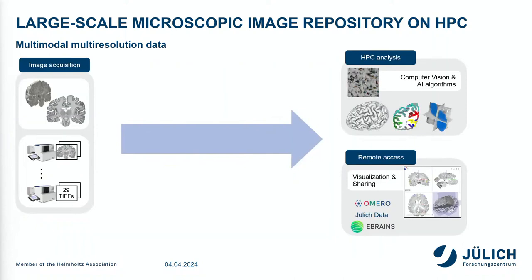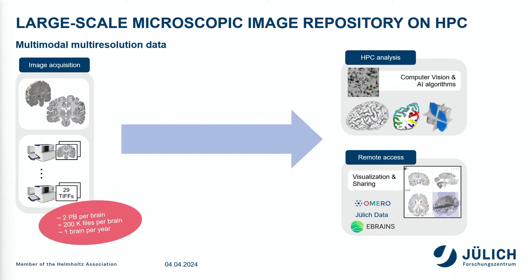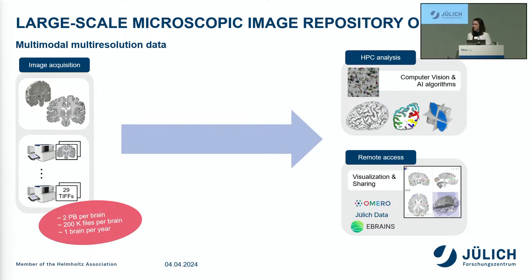To achieve this beautiful atlas, we take post-mortem human brains, cut them into thin slices, and these slices are then digitized with high-throughput scanners. We have about 7,000 sections for one brain, and each scanner outputs 29 TIFF files per section representing different focus levels. This results in a dataset of about 2 petabytes of data per brain with about 200,000 files, and we are currently scanning about one brain per year.